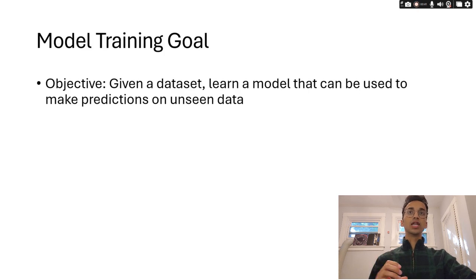So this is the general model training. Whenever you're training a machine learning model or deep learning model, the objective is that you have a data set and you have to learn a model that can be used to make predictions on unseen data, data that your model has not seen before. This is the general objective. And of course you want to make accurate predictions.